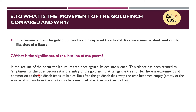What is the significance of the last line in the poem? In the last line, the laburnum tree once again subsides into silence. This silence is termed 'emptiness' by the poet because it is the entry of the goldfinch that brings the tree to life. After the goldfinch flies away, the tree becomes empty — empty of the source of commotion. The chicks also become quiet after their mother leaves, and again quiet stillness surrounds the tree.